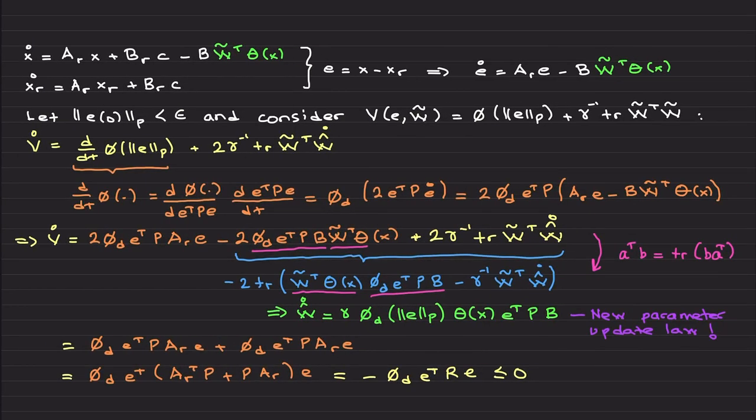So x dot dynamics satisfying this, and this was our reference model. Let's take a time derivative of e; we end up having this e dot dynamics. We did this several times. Up to here, nothing is different. Now I would like to select initial condition of e, P norm of e zero, to be less than epsilon. So this is an assumption that must be met. For cases if there is some uncertainty in the knowledge of x zero, wait until system settles such that you can more confidently read x zero and select xr zero to be somewhere close to x zero.